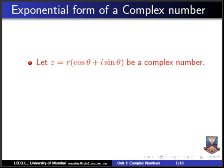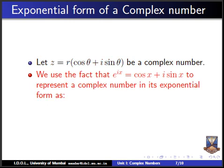Now let us go to the exponential form — the third way of writing a complex number. If Z = R(cos θ + i sin θ) in polar form, we use the fact that e^(iθ) = cos θ + i sin θ. Comparing, the bracket can be replaced with e^(iθ), giving Z = Re^(iθ) as the exponential form. When to use which form depends on the problem's requirement — for example, multiplication of complex numbers is simpler in exponential form.